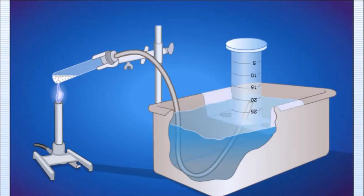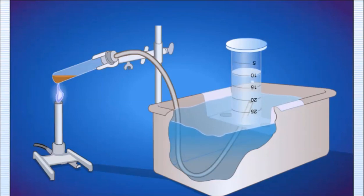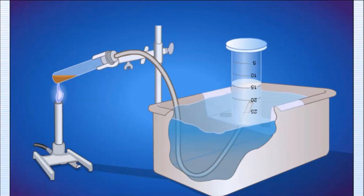The oxygen gas produced in the reaction can be collected by bubbling it through water and collecting it in a bottle or graduated cylinder. As oxygen gas is generated, the gas bubbles rise to the top and displace water from the cylinder. This method of collecting a gas is based on the assumptions that the gas does not react with water and that it is not appreciably soluble in it.